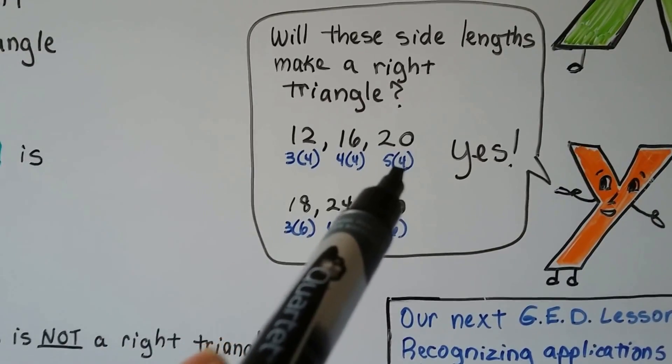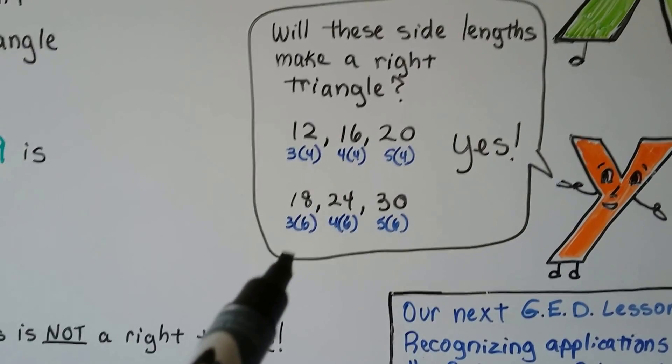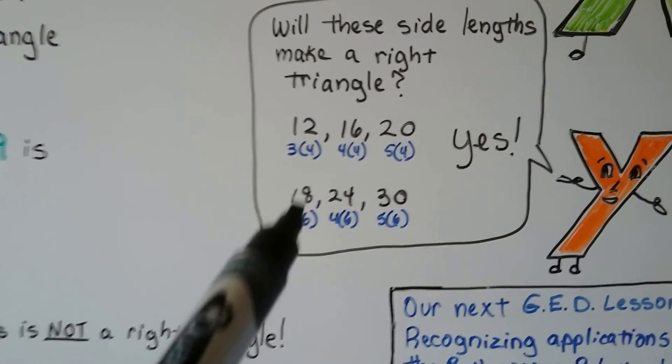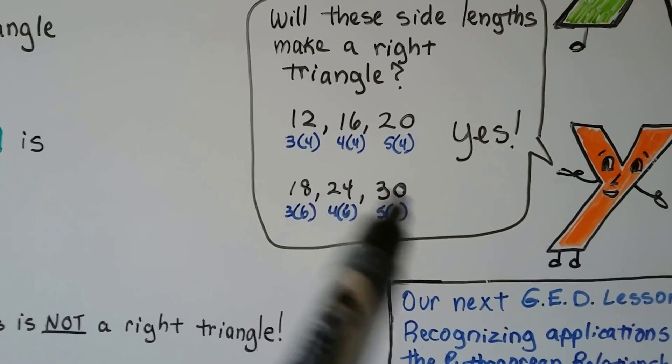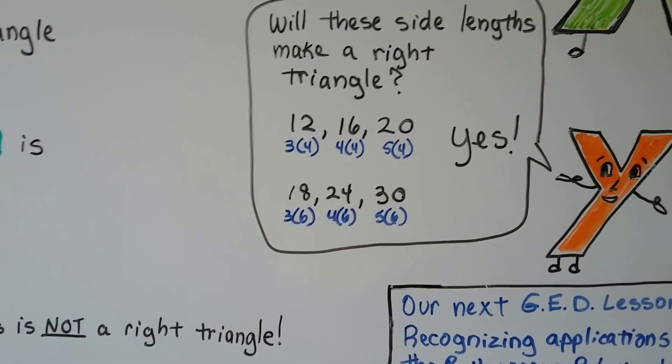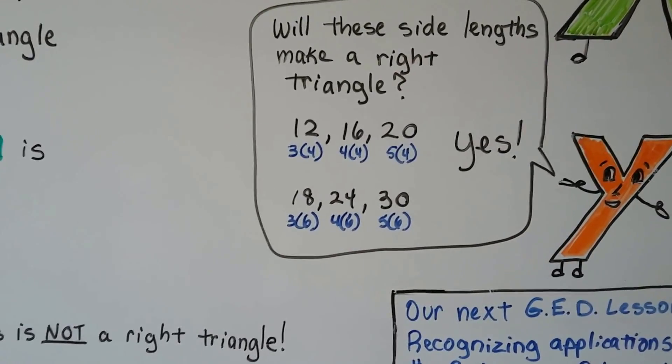How about here? Well, 3 times 6 is 18, 4 times 6 is 24, 5 times 6 is 30. So, those would work. They're all being multiplied by 6. So, that works.